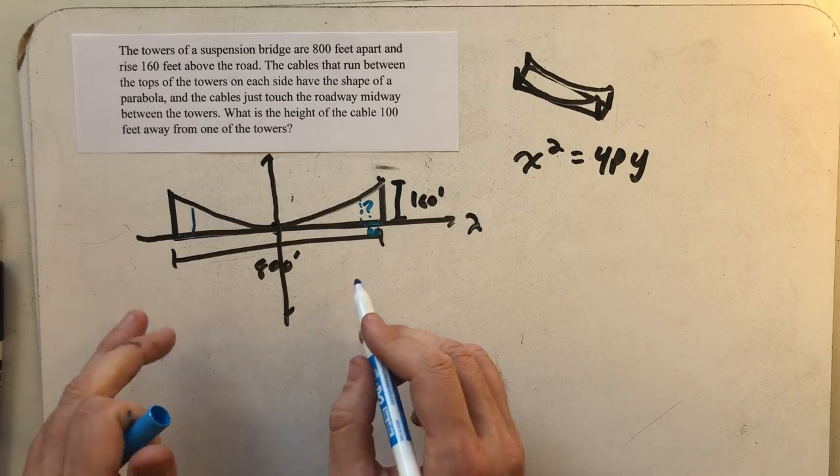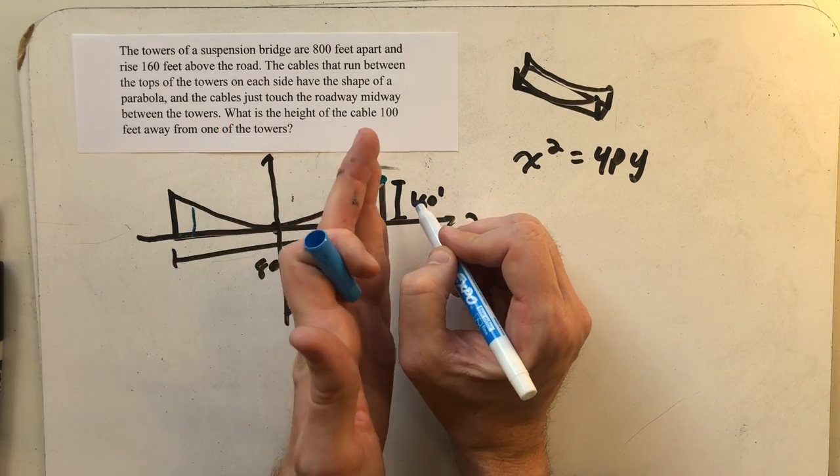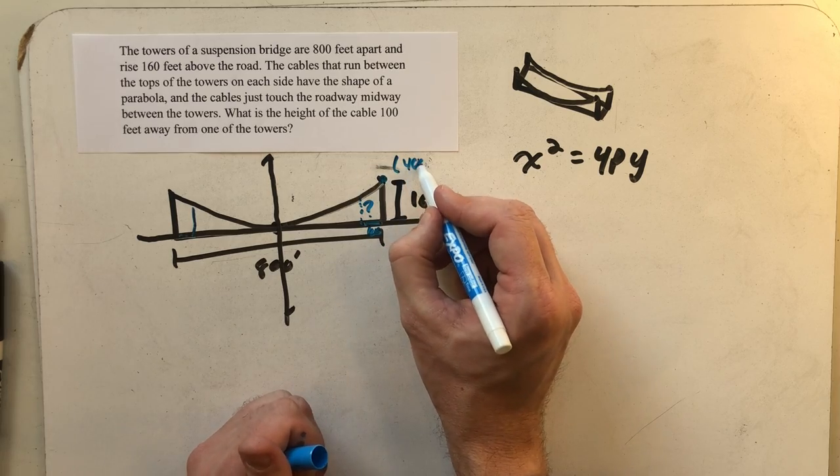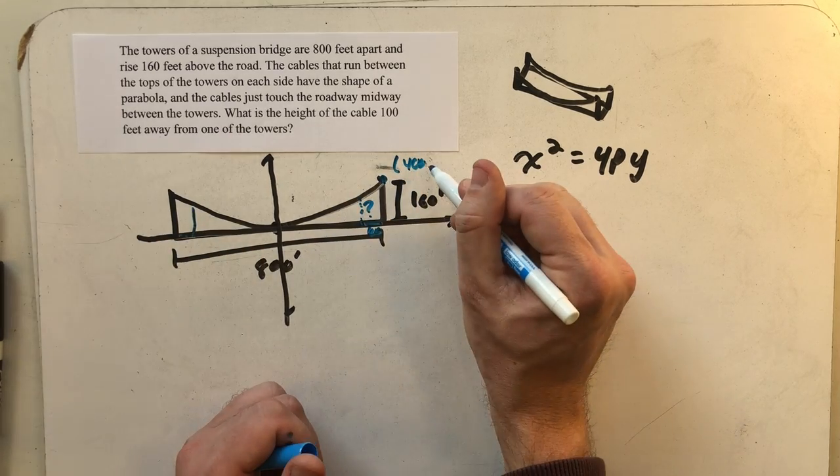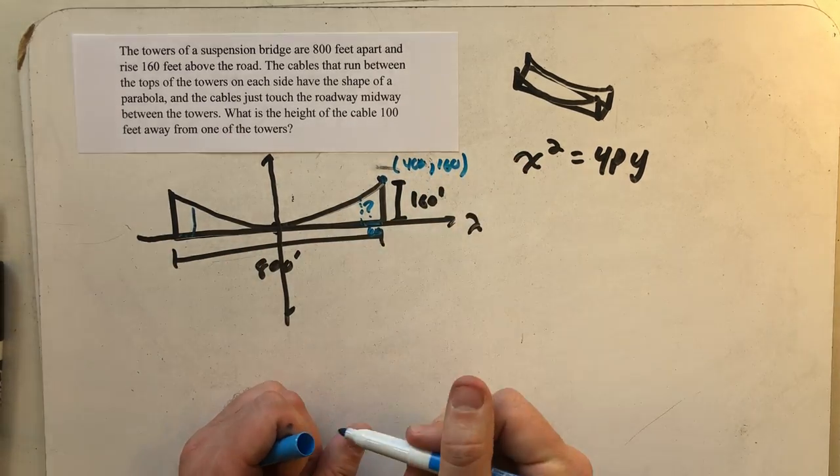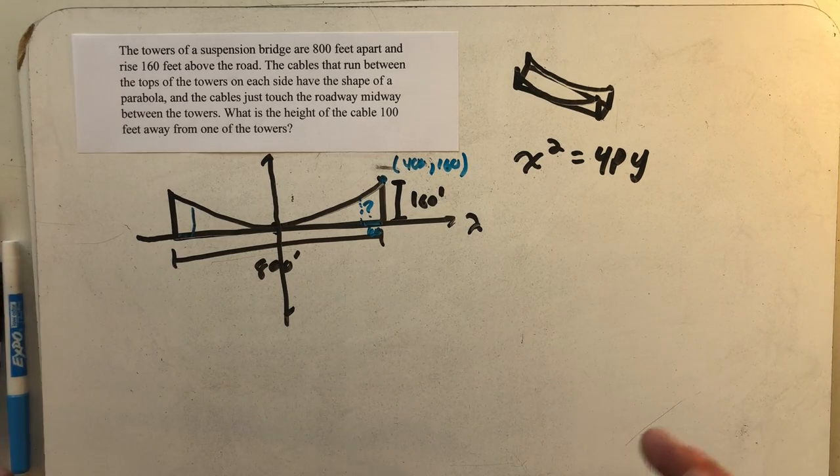Using the given information, I can identify this point as being 400 units over, half of the total distance, and 160 feet up. That has to be the point 400 comma 160.